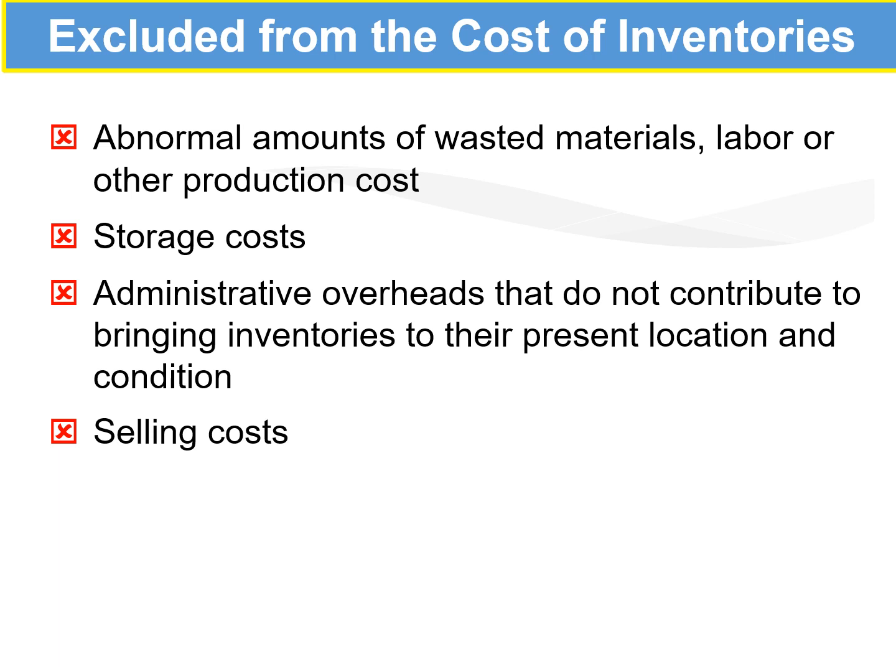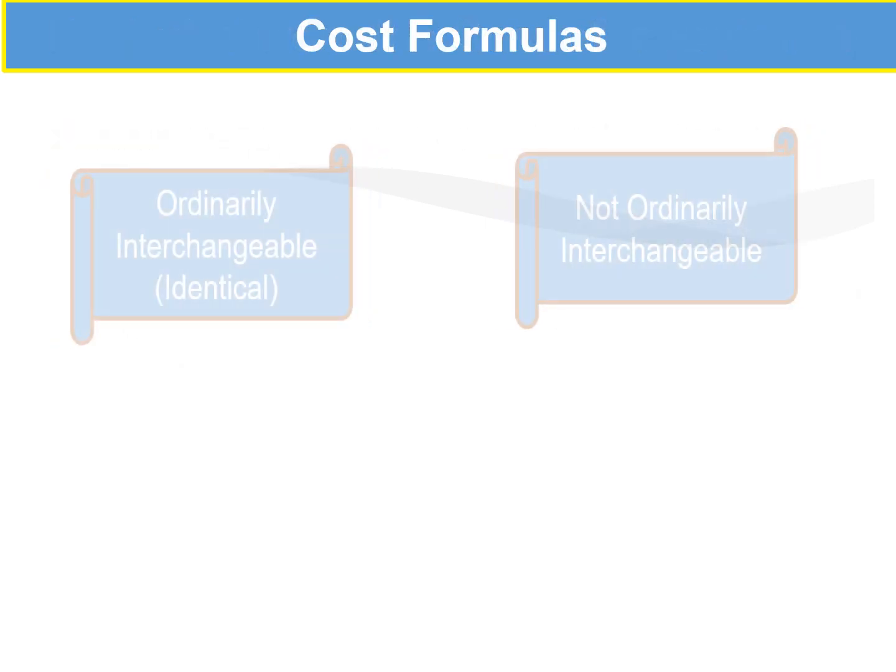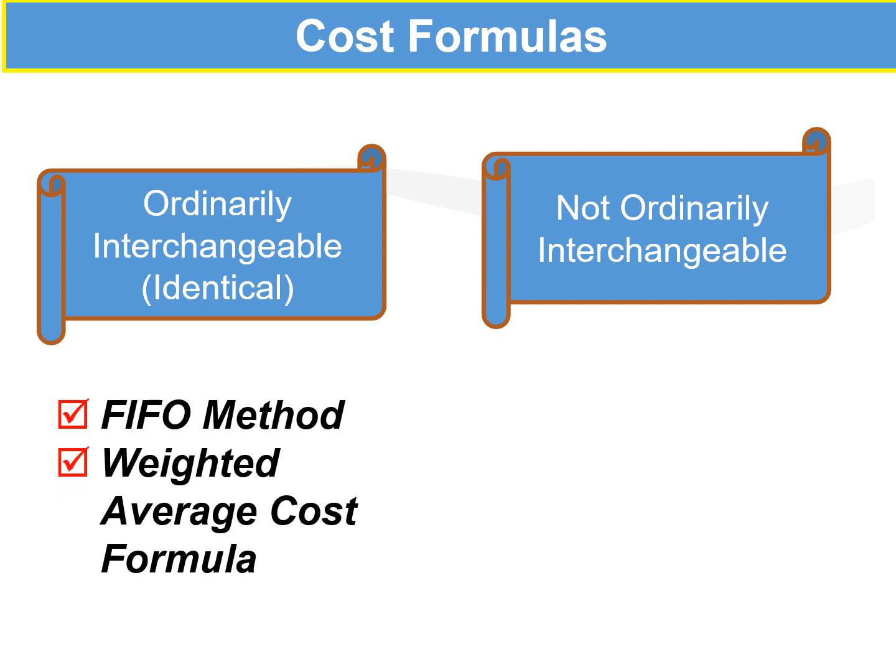All excluded costs are to be treated as expense. The cost formulas include the FIFO method — first in, first out — meaning the cost of inventory sold is always valued using the earliest cost first. We also have the weighted average, useful when products come from foreign sources subject to forex fluctuations, where you add all inventory costs and divide by the total number of units. We also have LIFO — last in, last out.